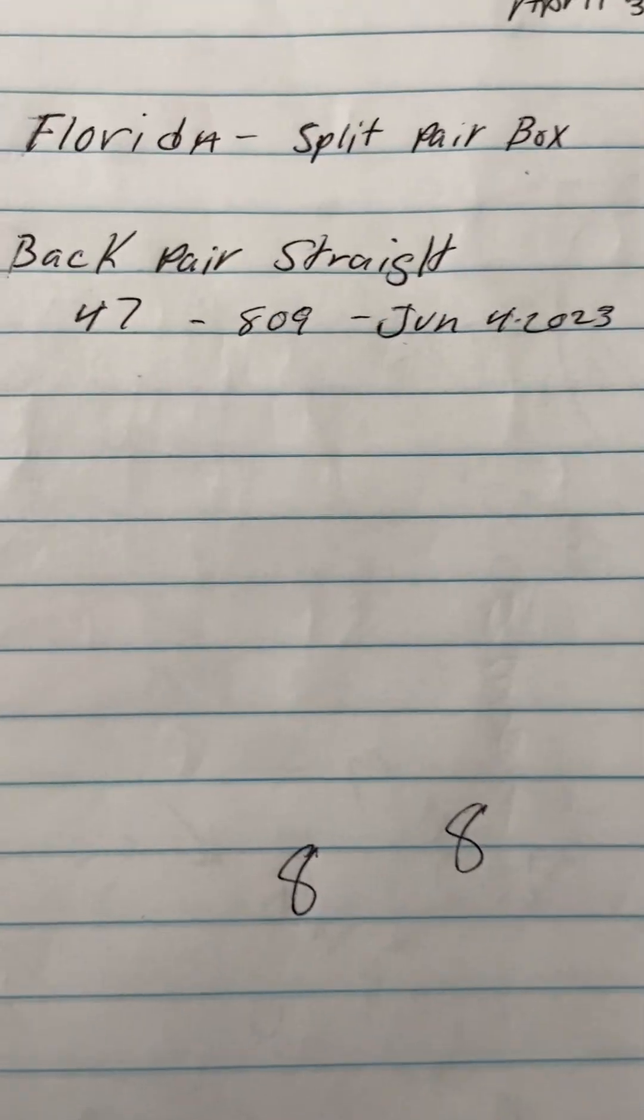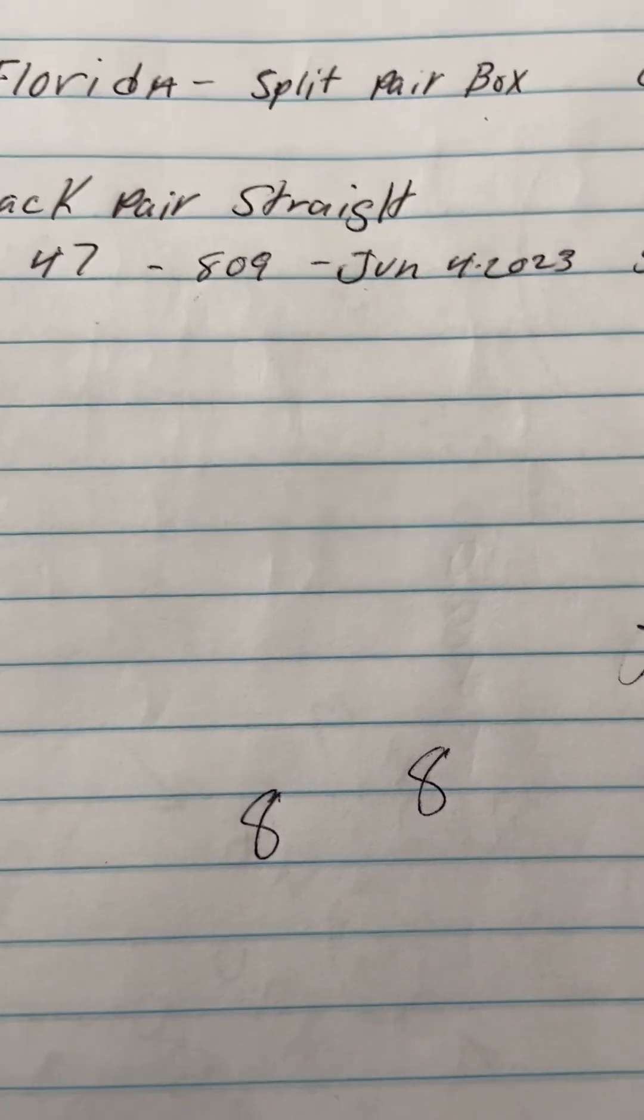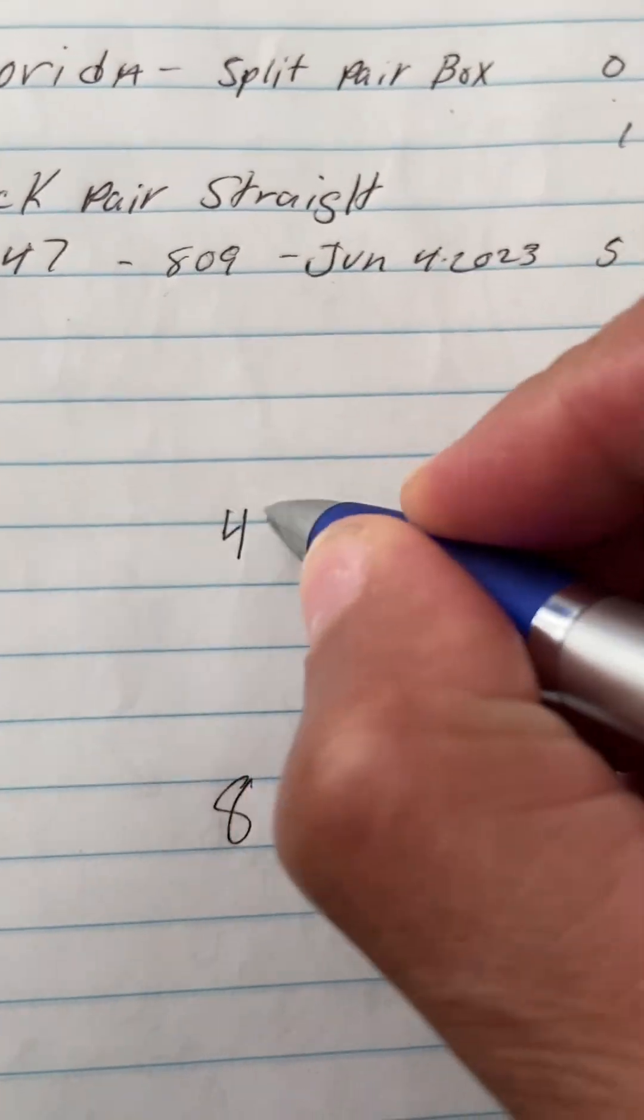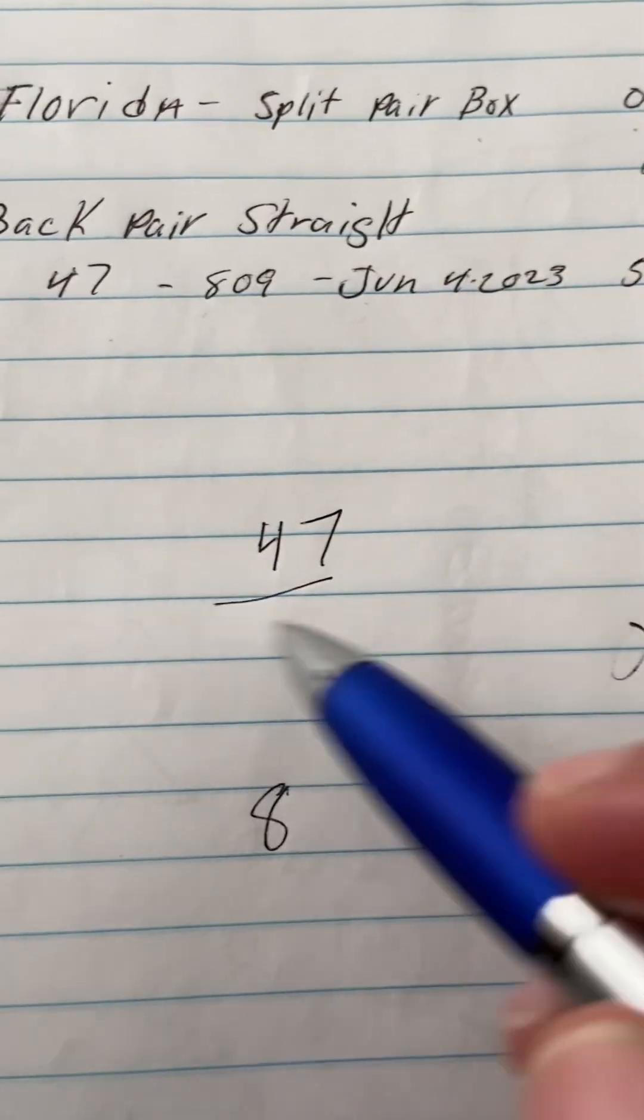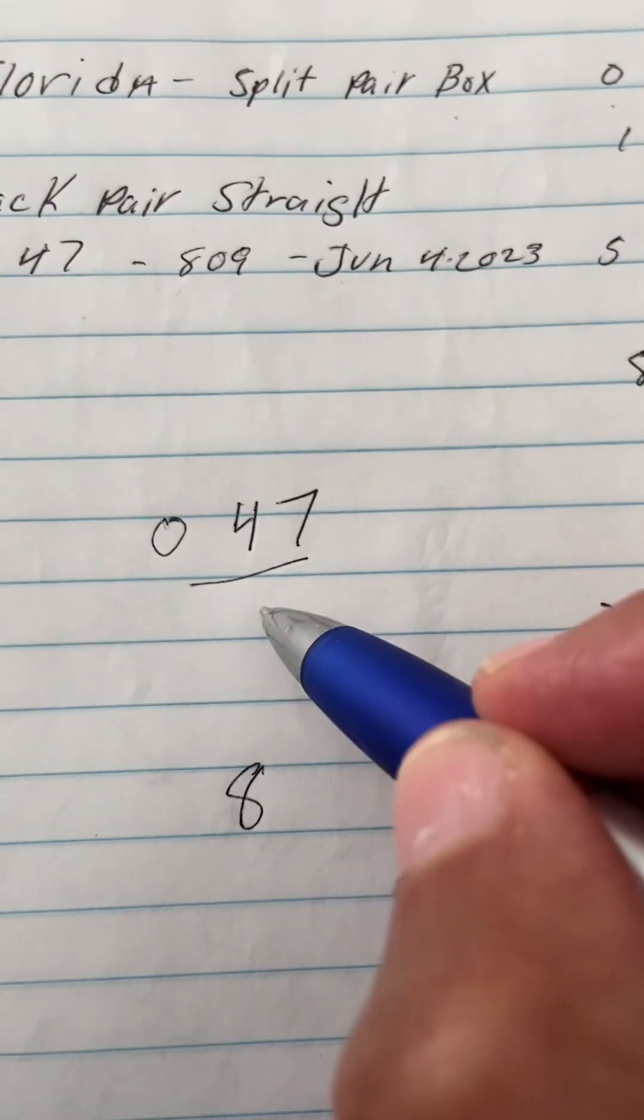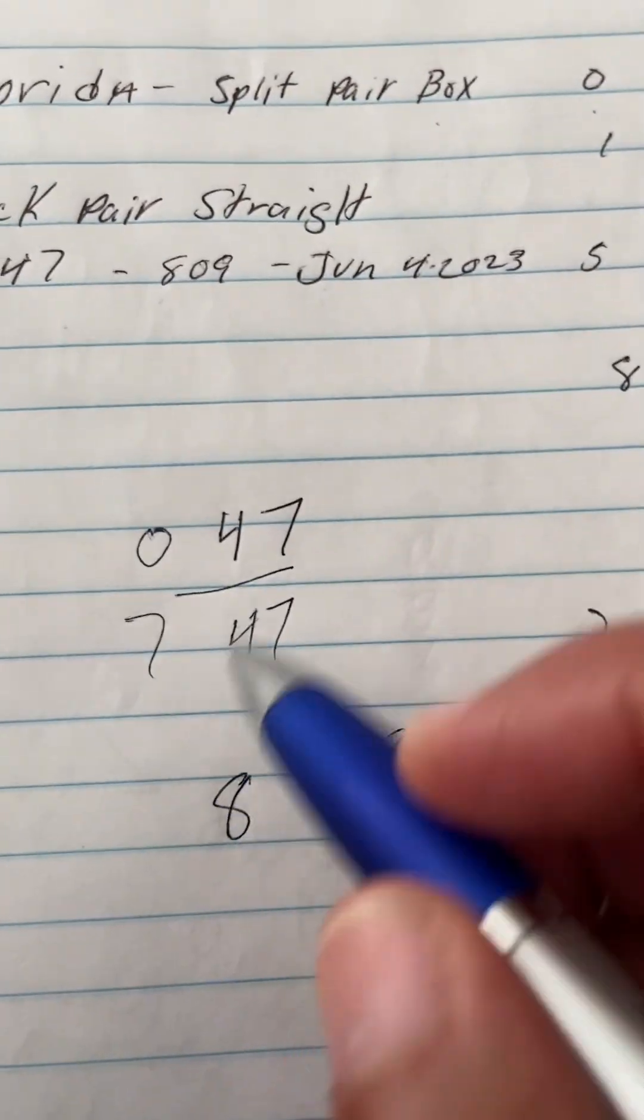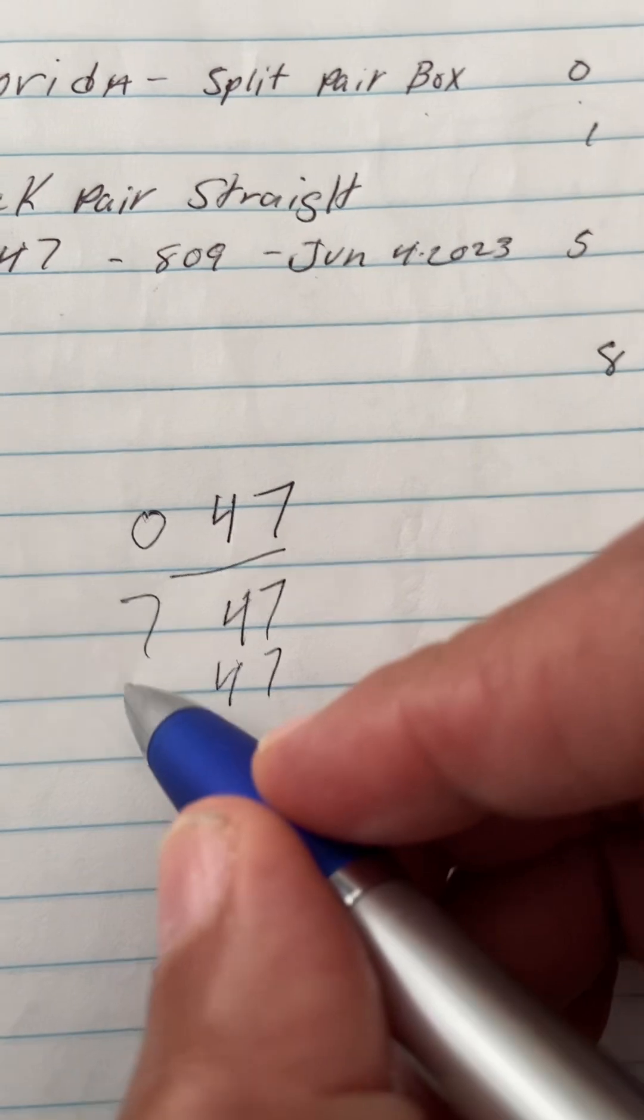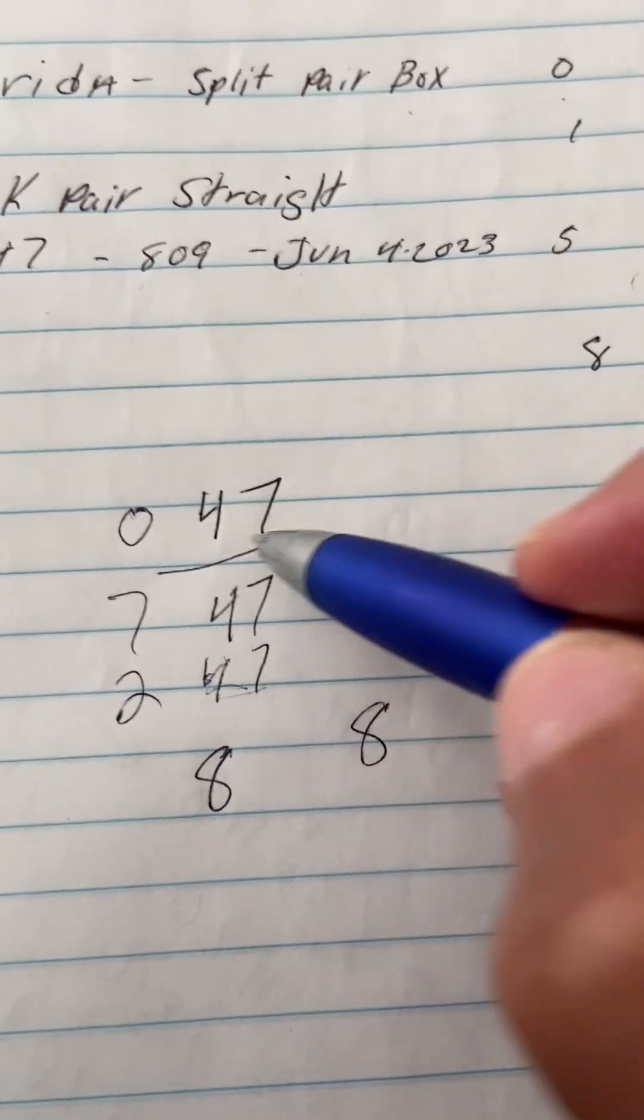So if your back pair 47 is out, this is your back pair, meaning anything can go up front. 4-7, anything can go in front of this for your back straight pair.